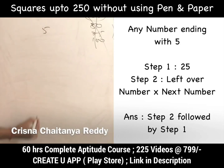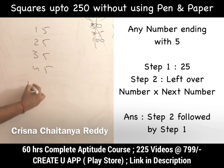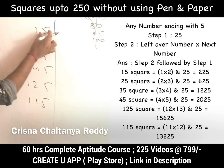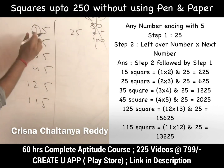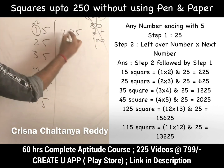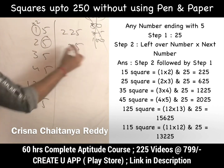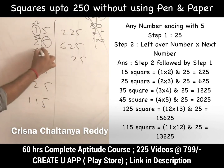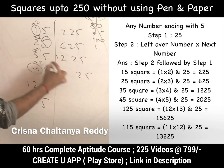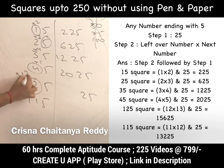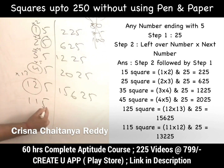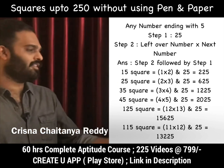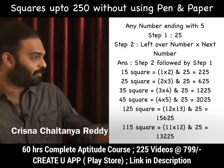Any number ending with 5 always ends in 25. Then multiply the remaining digits by the next consecutive number: 15² → 1×2 = 2, so 225. 25² → 2×3 = 6, so 625. 35² → 3×4 = 12, so 1225. 45² → 4×5 = 20, so 2025. For 125²: 12×13 = 156, so 15625. For 115²: 11×12 = 132, so 13225. This trick works only for numbers ending in 5.